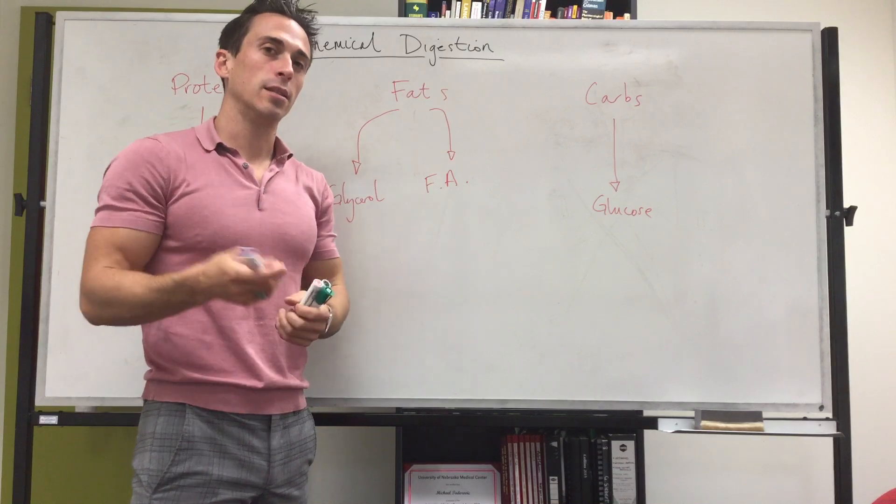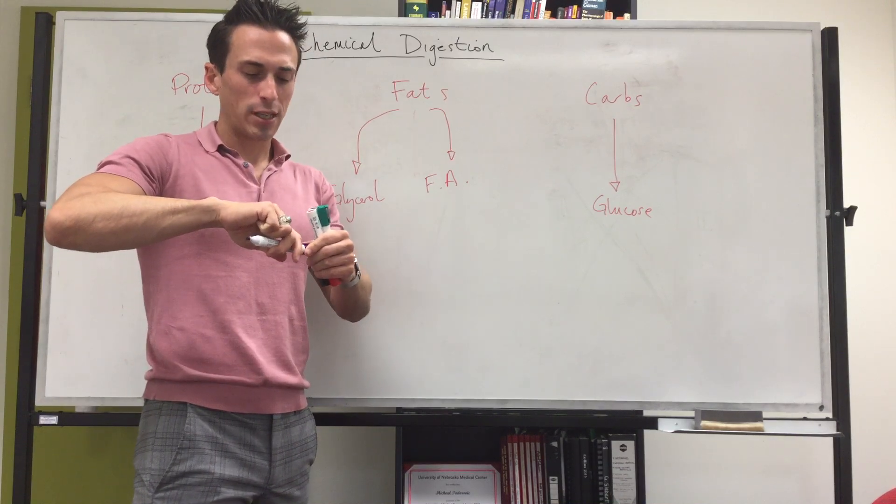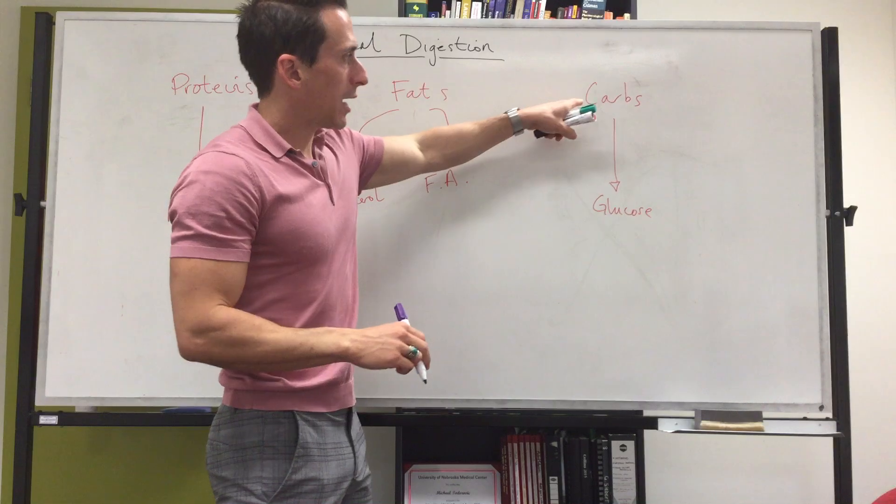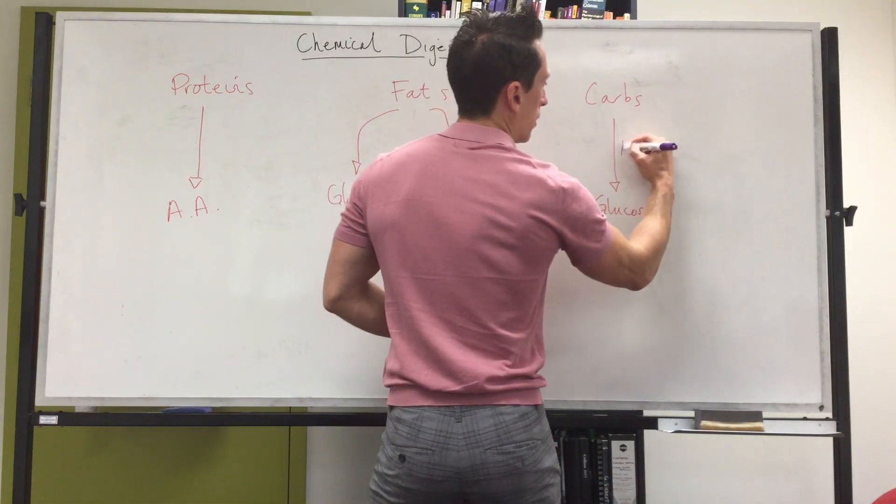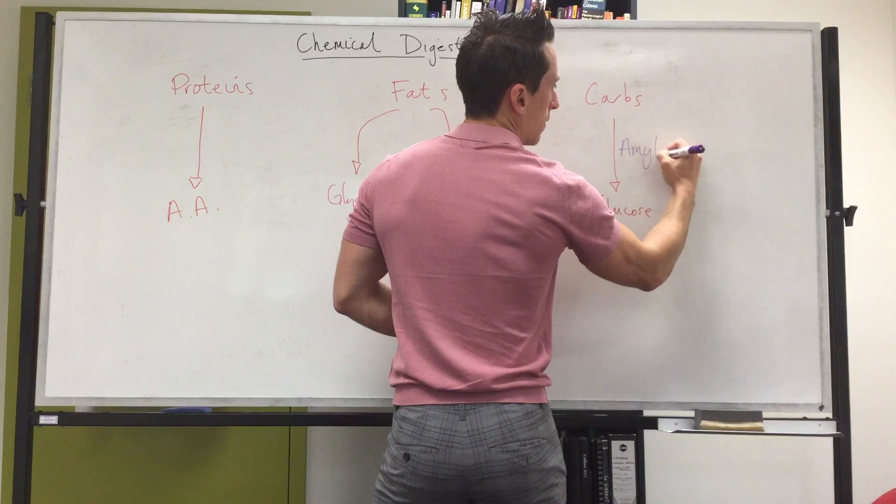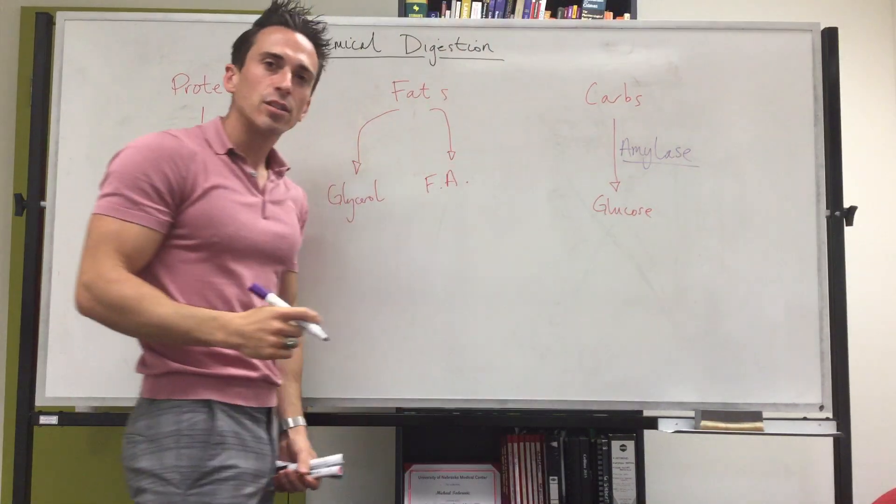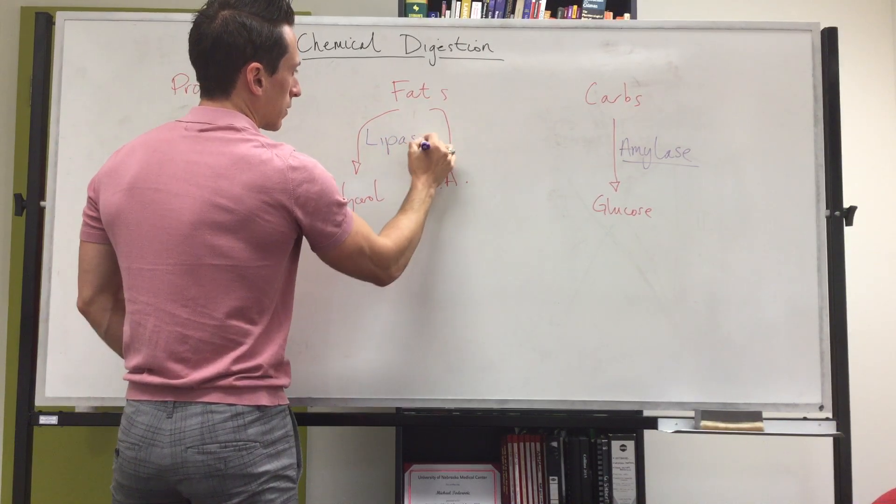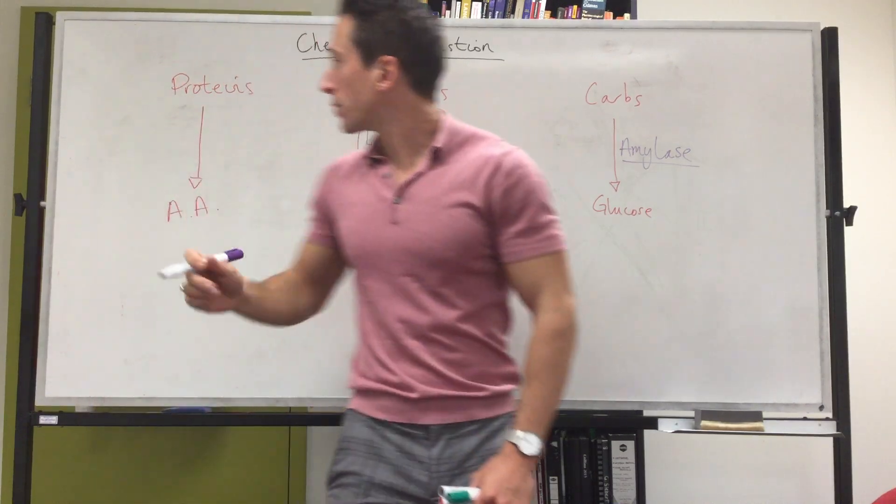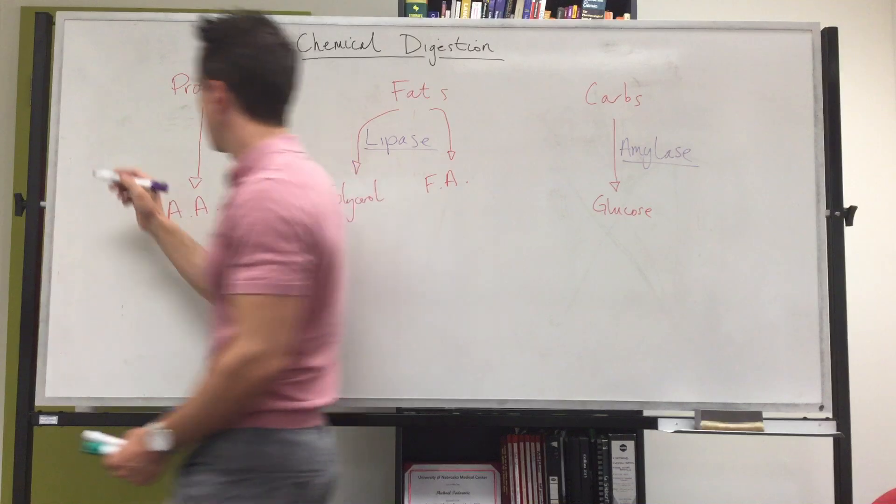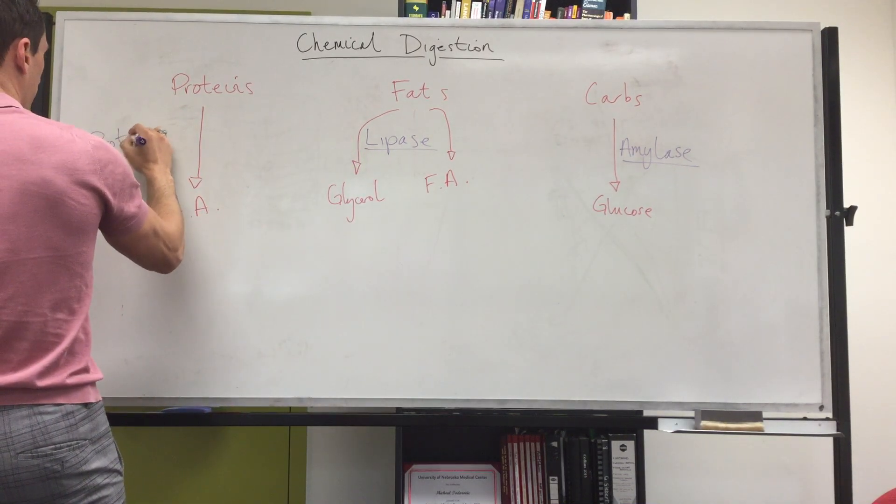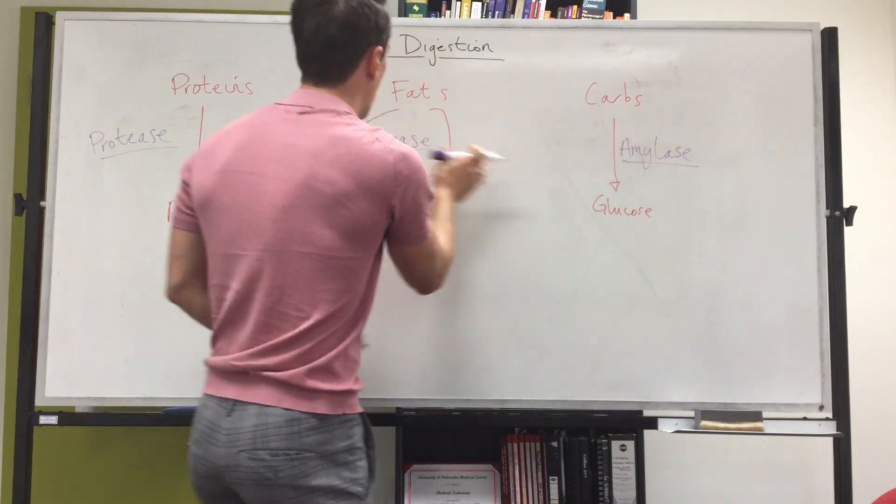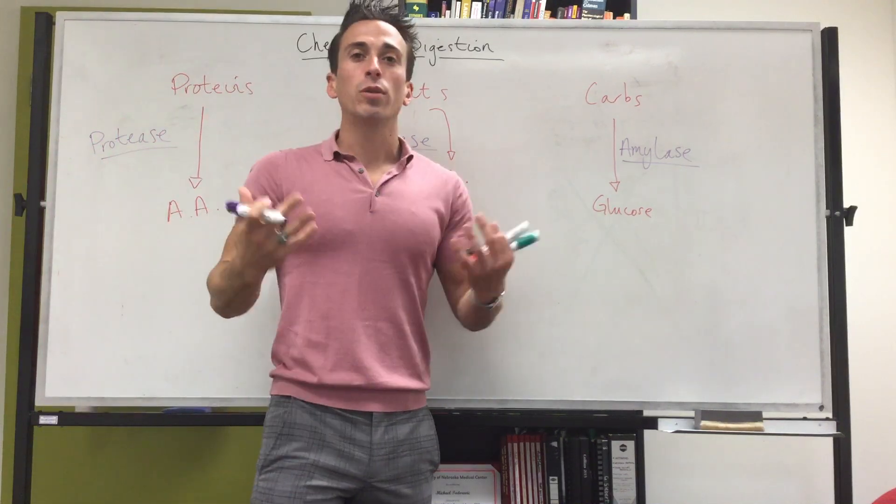The molecular scissors are enzymes, and usually enzymes end in the suffix -ase. So you're going to find that the enzyme that breaks down carbs to glucose is called amylase, the enzyme that breaks fats down is called lipase, and the enzyme that breaks down proteins is called protease. Now there are different subcategories of amylases, lipases, and proteases, but we're just going to generally refer to them as amylase, lipase, and protease.